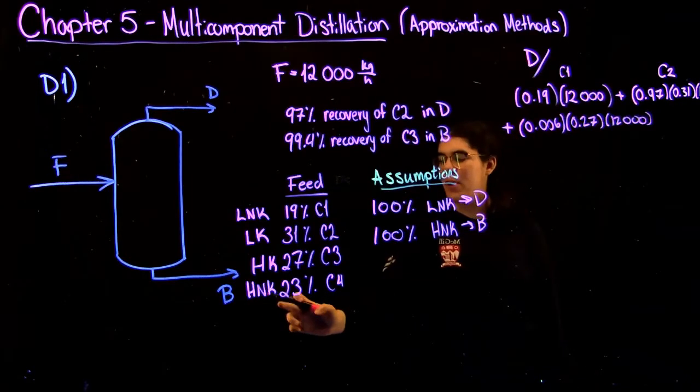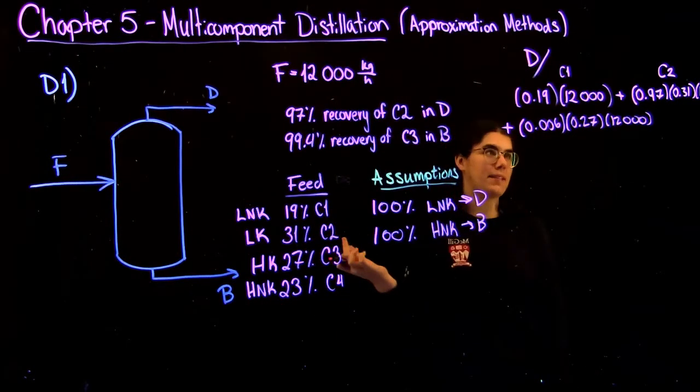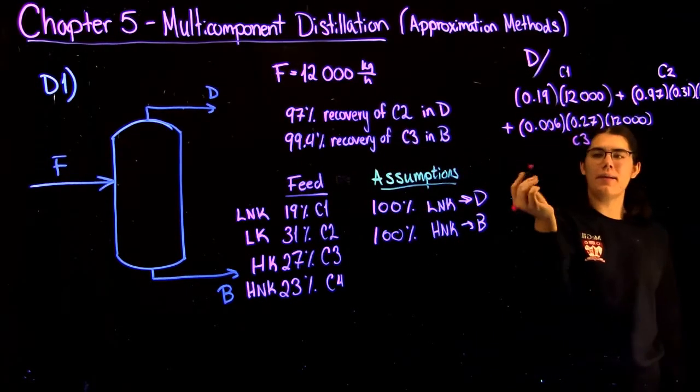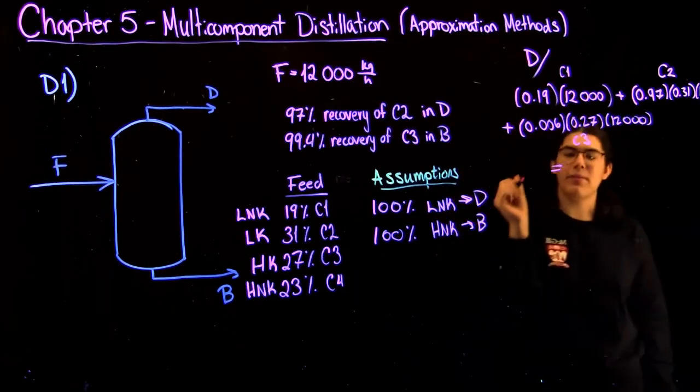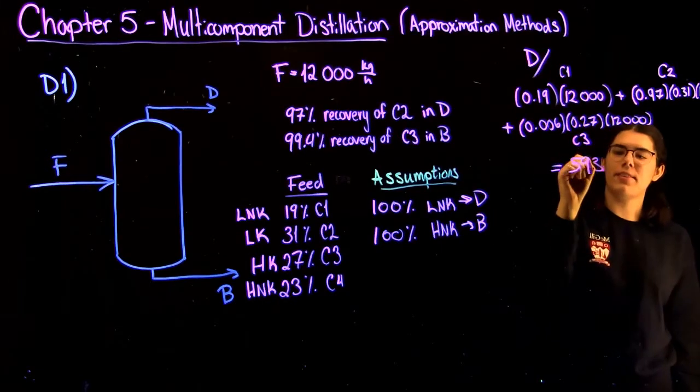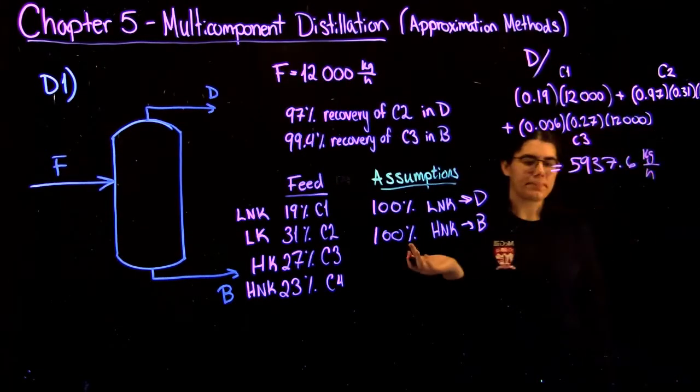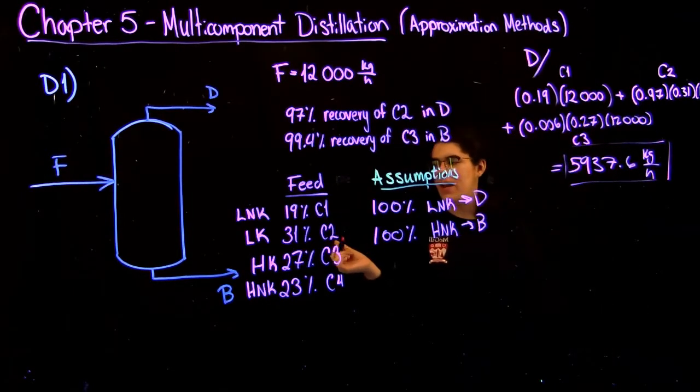And we also said that 100% of C4 comes out of the bottom, so that means 0 is in the distillate. So we're not going to include it. So if you add these all up, you get a total distillate flow rate of 5,937.6 kilograms per hour. And that is our answer for the distillate.